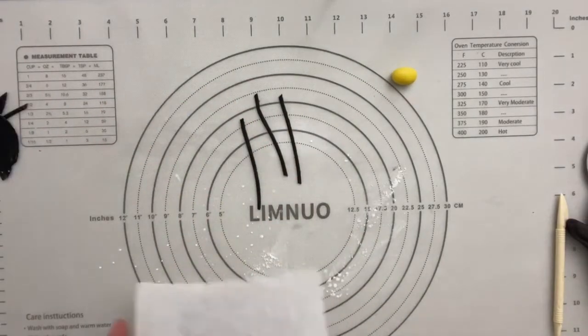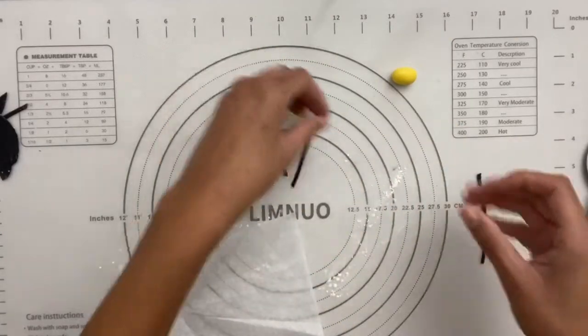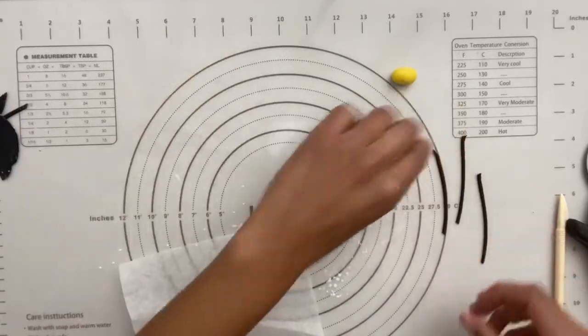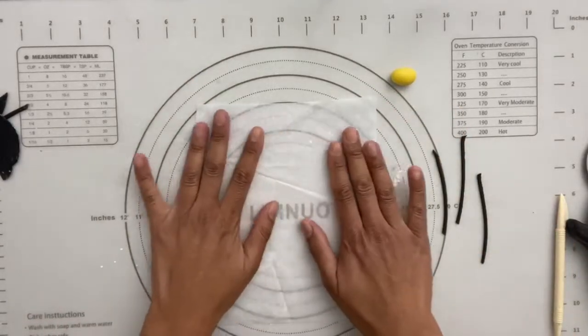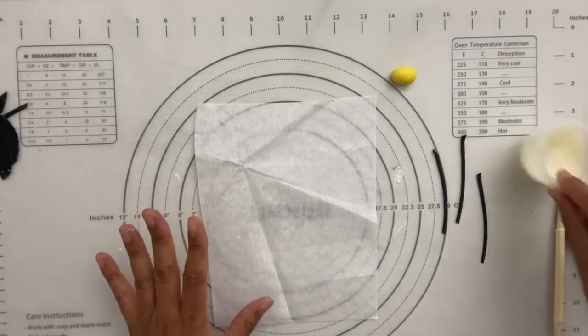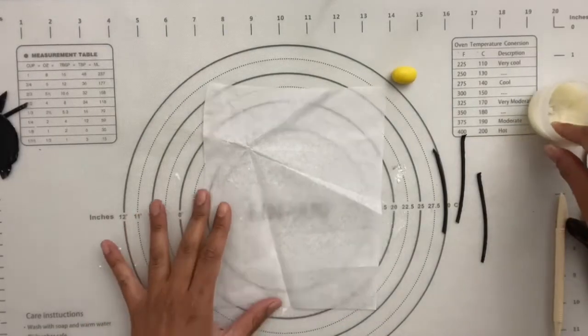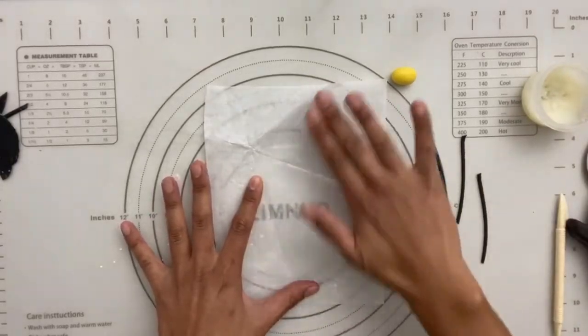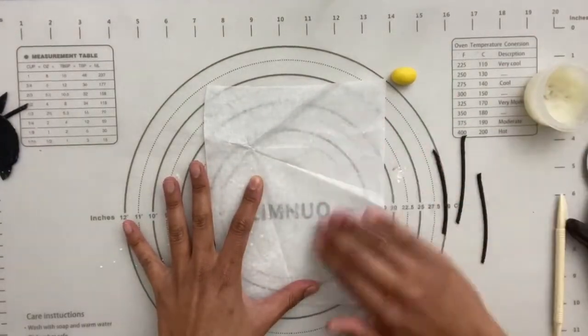So now the easiest way I think to do it is to take a little piece of parchment. Especially since most of the time when you get an order for these bees, you're going to be doing multiple bees. So this is a good way to sort of create an assembly line. So I have my parchment paper and I'm going to just rub a little shortening on it.